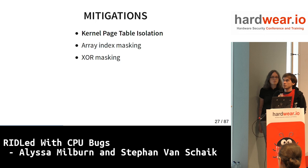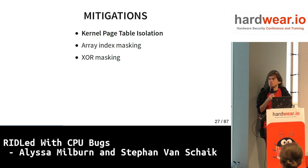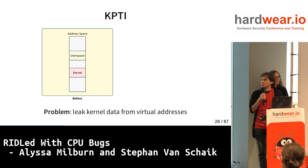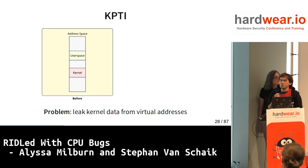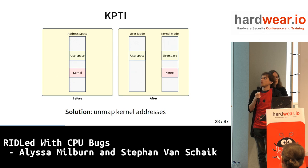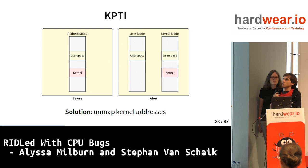There are mitigations against these things. The primary one against Meltdown is Kernel Page Table Isolation (KPTI). The problem is we leak kernel data from virtual addresses. The solution is to introduce two address spaces: one for the kernel where both kernel and user space are mapped, and one for user mode with just user space and a few kernel pages to switch between them. Now kernel addresses aren't mapped in user mode, so you can't speculatively read them anymore.